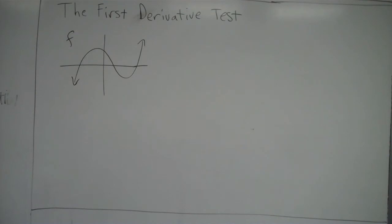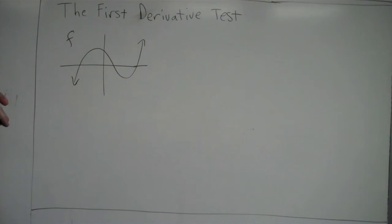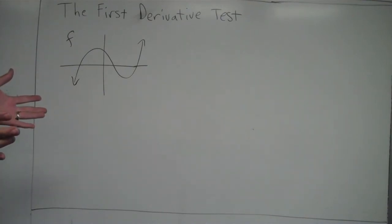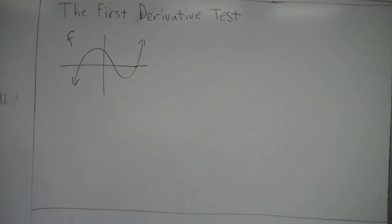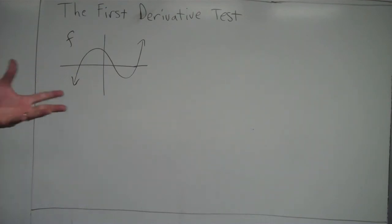One thing that the first derivative tells us is where a function is increasing or decreasing. Increasing and decreasing is directly related to slope. Increasing is another way of saying positive slope. Decreasing is another way of saying negative slope. In calculus, you generally see the words increasing or decreasing versus positive slope or negative slope.